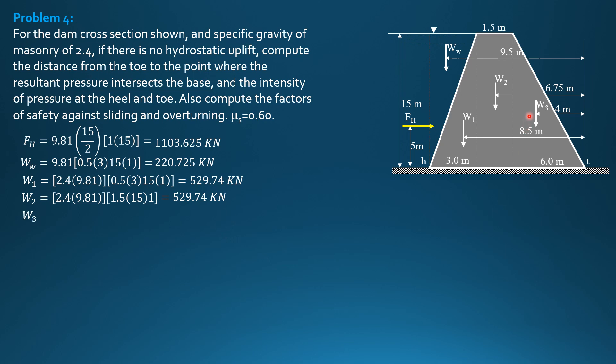Weight sub 3 is 2.4 times 9.81, 0.5 times 6, or one-half of 6 times 15 times 1. It is equal to 1059.48 kilonewtons. So RY is 220.725 plus 529.74 plus 529.74 plus 1059.48. So RY is equal to 2339.685 kilonewtons.